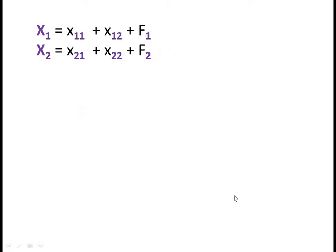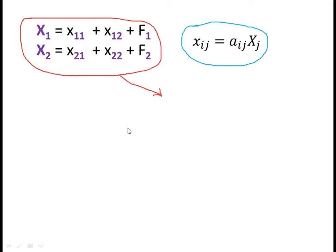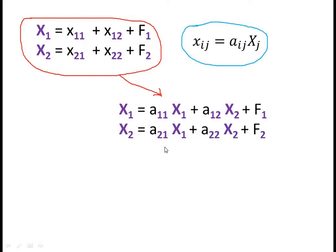Using the input coefficient aij, we can write the two equations as: x1 equals a11·x1 plus a12·x2 plus f1; and x2 equals a21·x1 plus a22·x2 plus f2.